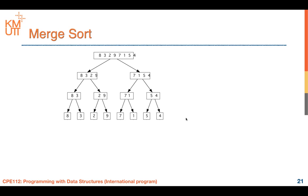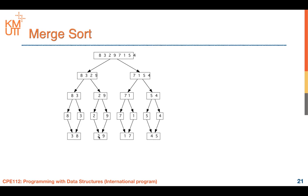Once we have single elements, we sort two elements and combine them. From this example, 8 and 3 combine to [3, 8]; 2 and 9 combine to [2, 9]; 7 and 1 combine to [1, 7]; and 5 and 4 combine to [4, 5]. Then combining further in ascending order, we get [2, 3, 8, 9] and [1, 4, 5, 7]. Finally we merge them together and get the result: 1, 2, 3, 4, 5, 7, 8, 9.